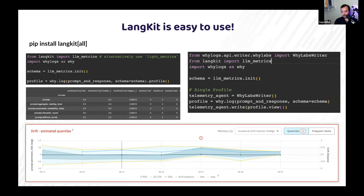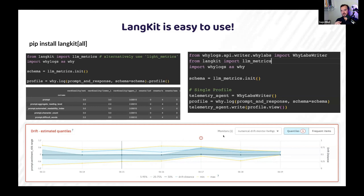If you want to write to our AI observability store for these profiles, it's just a couple more lines of code. You can write them up and then easily view them in a time series view, where you can set up monitors. You can say if sentiment, response relevancy, or anything drifted a certain amount, then send an email, a Slack message, or trigger a workflow in your MLOps environment.